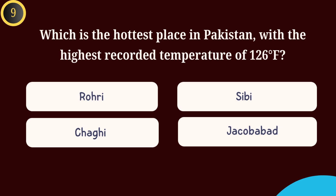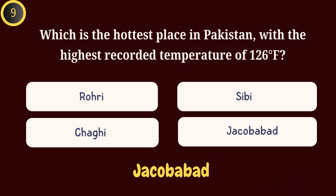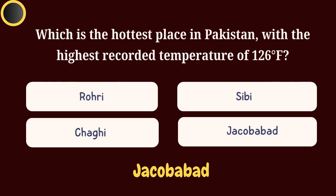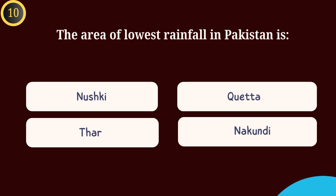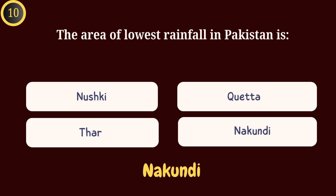Question 9: Which is the hottest place of Pakistan with the highest recorded temperature of 126 degrees Fahrenheit? Answer: Jacobabad. Question 10: The area of lowest rainfall in Pakistan is — Answer: Nokkundi.